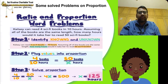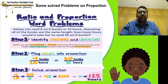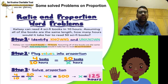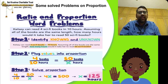Ratio and Proportions word problem: Kelsey can read 4 sci-fi books in 10 hours. How many hours would it take her to read 50 sci-fi books? Assuming all of the books are of the same length.